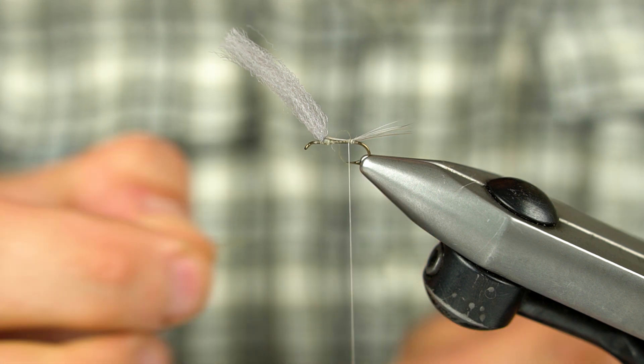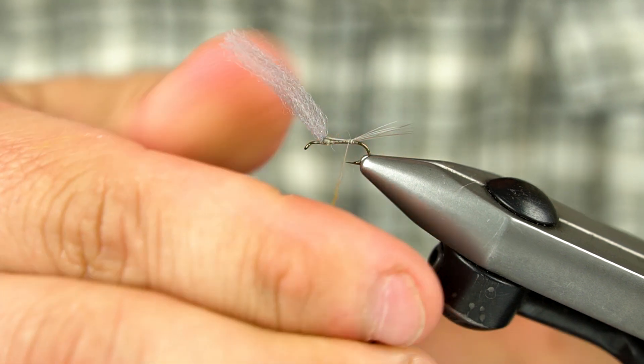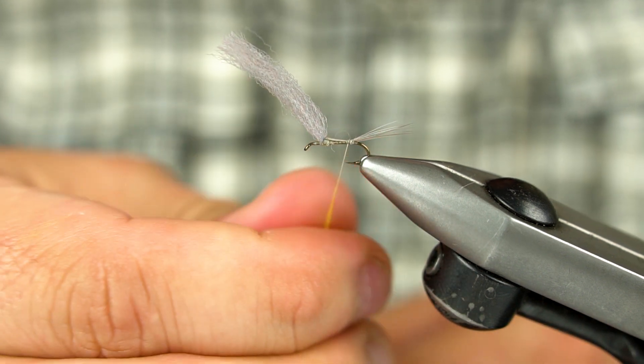Add some dubbing to the thread and work your way forward on the hook, stopping just shy of the wing.